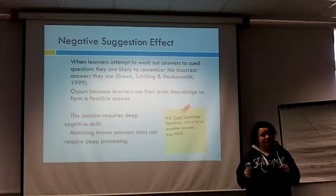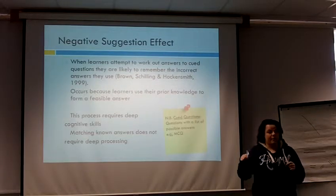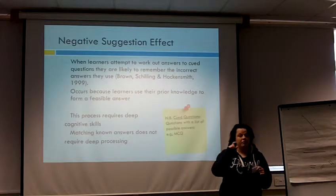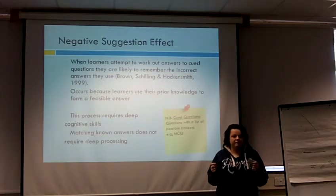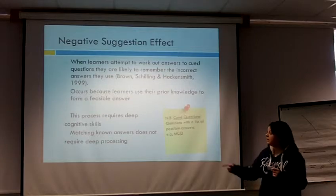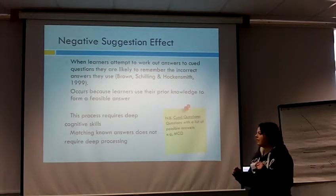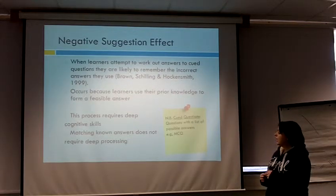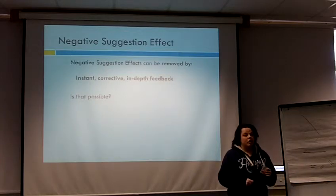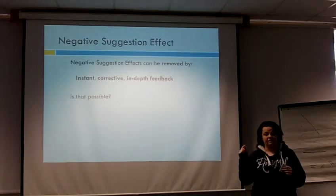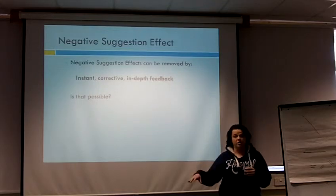The negative suggestion effect means that if you work out your answers that way in an MCQ exam, the answers you'll remember most are the wrong ones you eliminated. Because with something you've read word for word and know off by heart, there's no deep thought or cognitive processes making you engage with that information. But with a question you don't know the answer to, you spend so much time working out how the options fit with what you know that you end up remembering the wrong answer. This can be combated with instant, corrective, in-depth feedback — not just 'question one is A, question two is B,' but genuinely in-depth explanation.